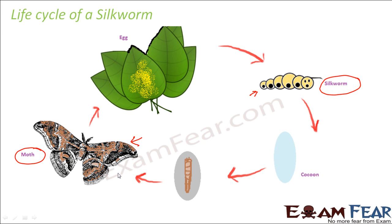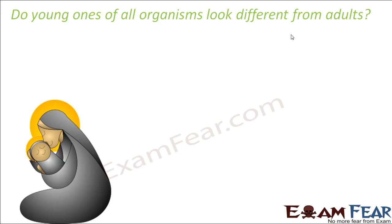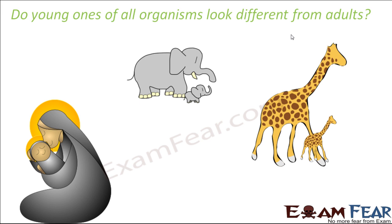These were two examples where we see drastic changes throughout the life cycle, and this kind of development is called metamorphosis. Metamorphosis tells us about the drastic changes in the life cycle of an animal, where the animal looks very different at different stages of its life. But that doesn't mean all young ones look different from adults — look at human beings, elephants, and giraffes, where the young ones look similar to their adults. In human beings, height and weight increase and hair turns white with age, but overall the appearance remains similar.